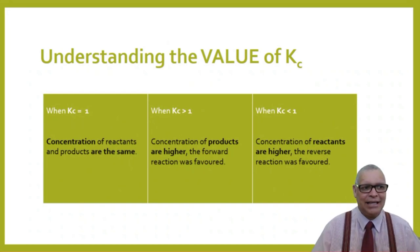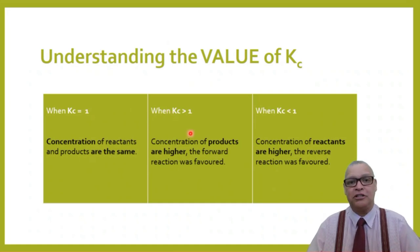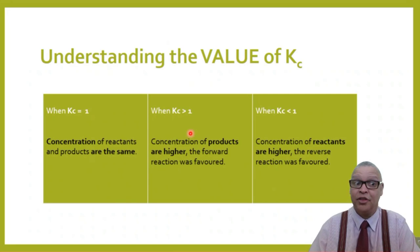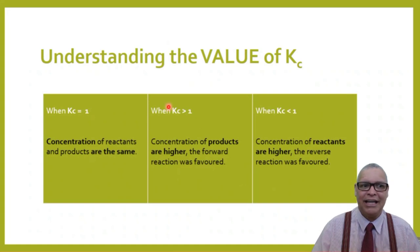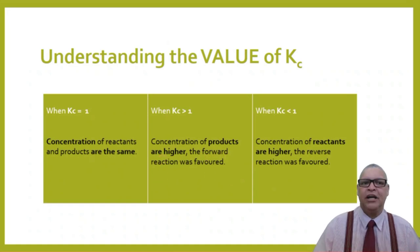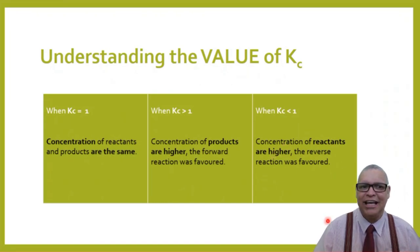Understanding what Kc values mean: when Kc equals one, the concentration of reactants and products are the same. When Kc is greater than one, the concentration of products is higher and the forward reaction is favored. When Kc is less than one, the concentration of reactants is higher and the reverse reaction is favored. This is a very handy tool to keep in mind for examinations.